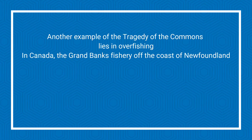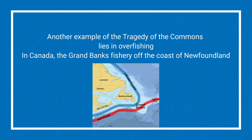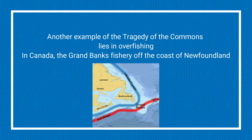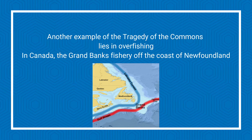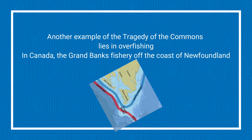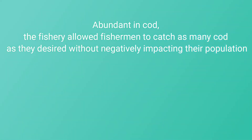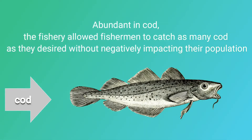Another example of the tragedy of the commons lies in overfishing. In Canada, the Grand Banks fishery off the coast of Newfoundland was abundant in cod, and the fishery allowed fishermen to catch as many cod as they desired without negatively impacting their population.